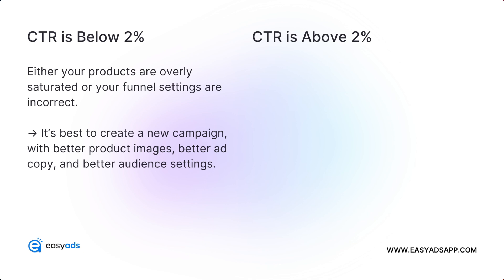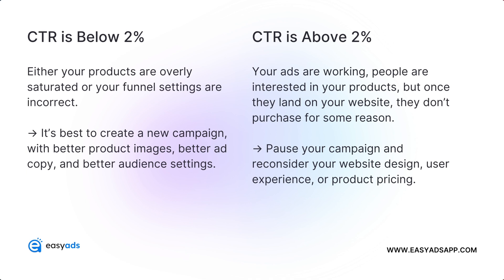In this case, we can tell that the problem is really within your ads. So the best thing to do is to create a new campaign with better product images, better ad copy, and better audience targeting. If your CTR is above 2% and you're still not getting any results, it means that your ads are working. People are interested in your products and they click on your ads to land on your website to learn more about them. But once they arrive at your website, they don't purchase for some reason. The best thing to do here is to pause your campaign and reconsider your product design, your on-site user experience, or product pricing, as these can be the main objections as to why someone interested in your products would not buy from you.